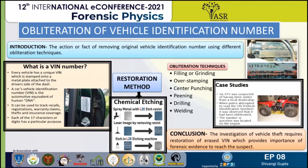Chemical etching is one of the most sensitive methods to recover obliterated serial numbers on metal surfaces. At high pressure and high temperature, a chemical is sprayed to remove material and create a permanent image in the metal. To conclude, investigation of vehicle theft often requires restoration of erased vehicle identification numbers, which provides important forensic evidence to reach the suspect. Thank you, that's all from my side.